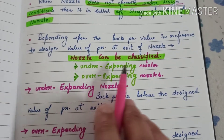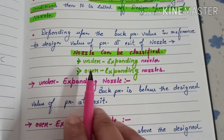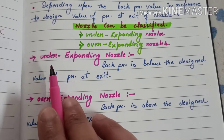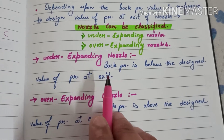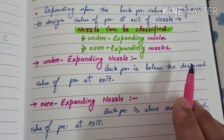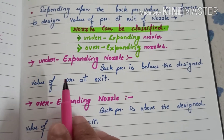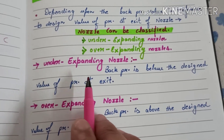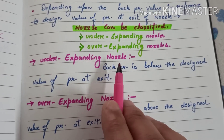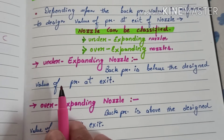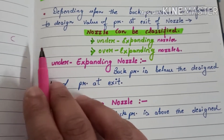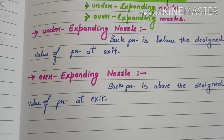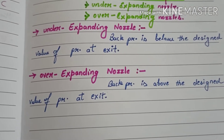The nozzle can be classified into two categories: first is under-expanding and second is over-expanding. An under-expanding nozzle is when the back pressure is below the design value of pressure at exit, that means the pressure at exit is greater than the back pressure.